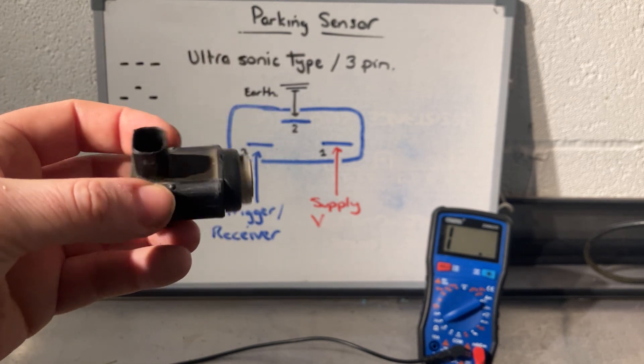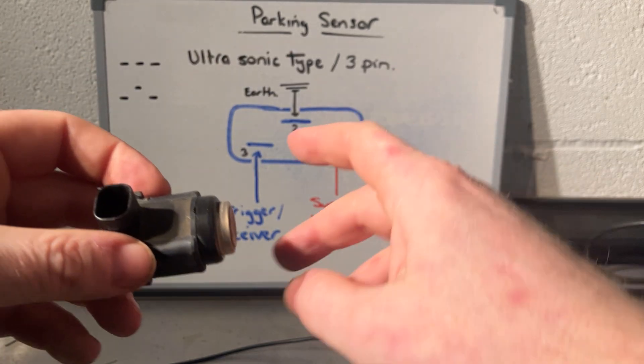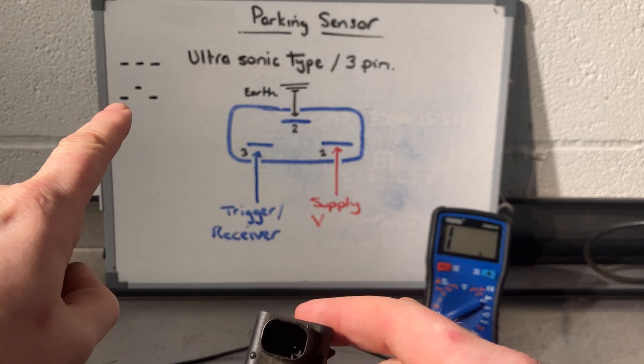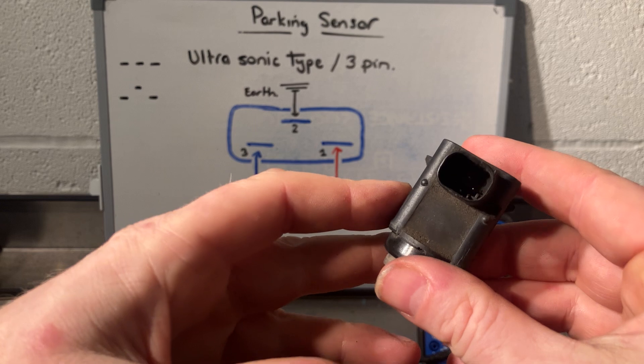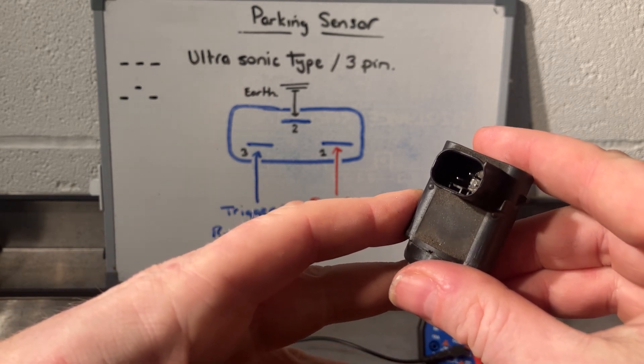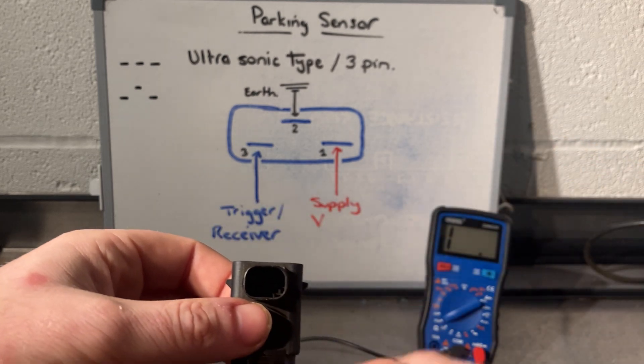It's the ultrasonic type. As you can see up on the board, it's a three pin. Sometimes the three pins are in a line and sometimes in this triangle shape. This one here, hopefully you can see with the light I've got here in winter, is a three pin triangle shape.